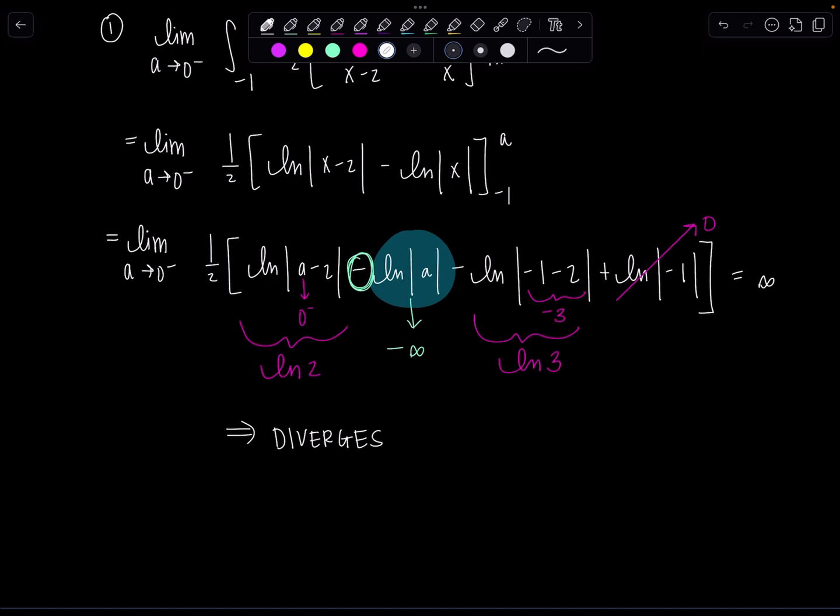Positive infinity and negative infinity don't cancel each other out. You can't say that the limit exists. Remember, infinity minus infinity, that's my coffee, is an indeterminate form. So they will not cancel each other out.